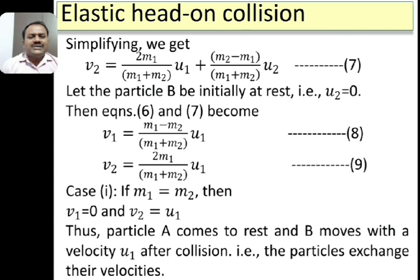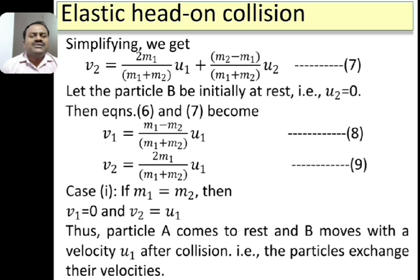Considering a few special cases: in case 1, if M1 = M2, that means both colliding particles are identical. Using this condition in equations 8 and 9 we get V1 = 0 and V2 = U1. So when a particle with certain velocity collides with another identical particle at rest, the first particle comes to rest whereas the second particle moves with the initial velocity of the first particle. In general, the particles exchange their velocities after collision.